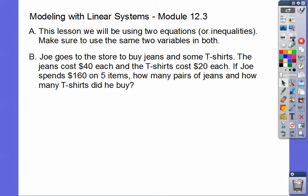Here's an example. Joe goes to the store and buys jeans and some t-shirts. The jeans cost $40 each, and the t-shirts cost $20 each. Joe spends a total of $160 on five items. So how many pairs of jeans and how many t-shirts did he buy?